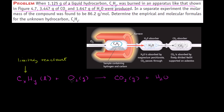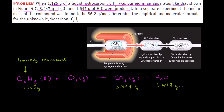We just have an abundance of oxygen — just enough to combust all of this hydrocarbon into carbon dioxide and water. They tell us we have 1.125 grams of the mystery substance, and it produces 3.447 grams of carbon dioxide and 1.647 grams of water.